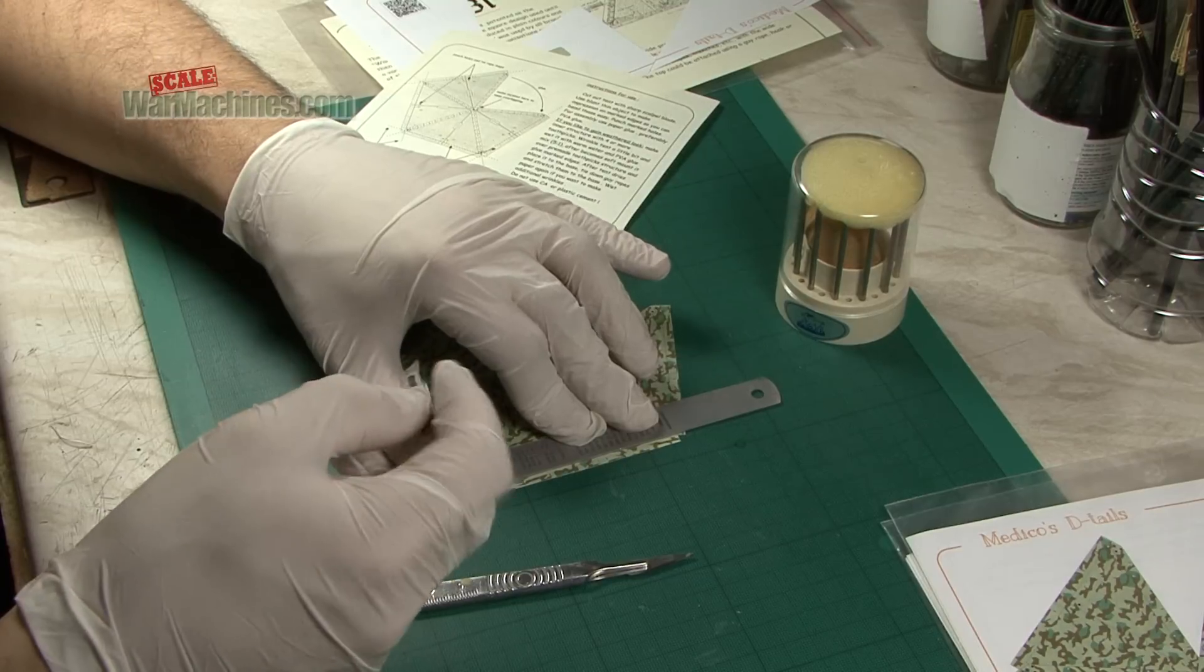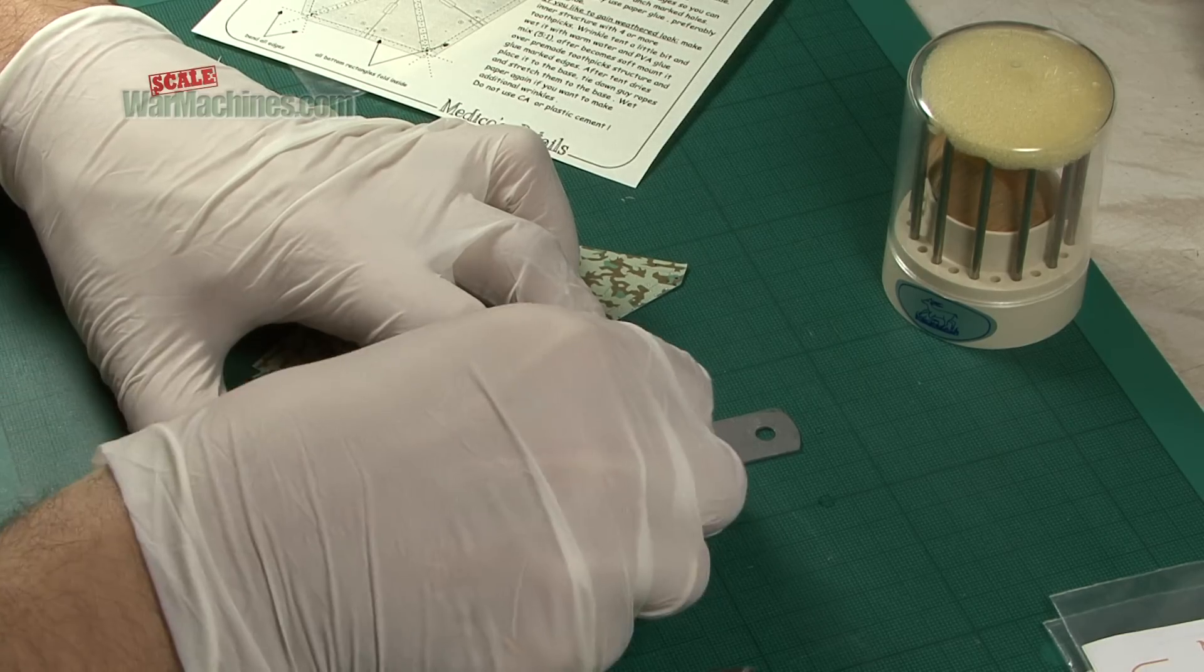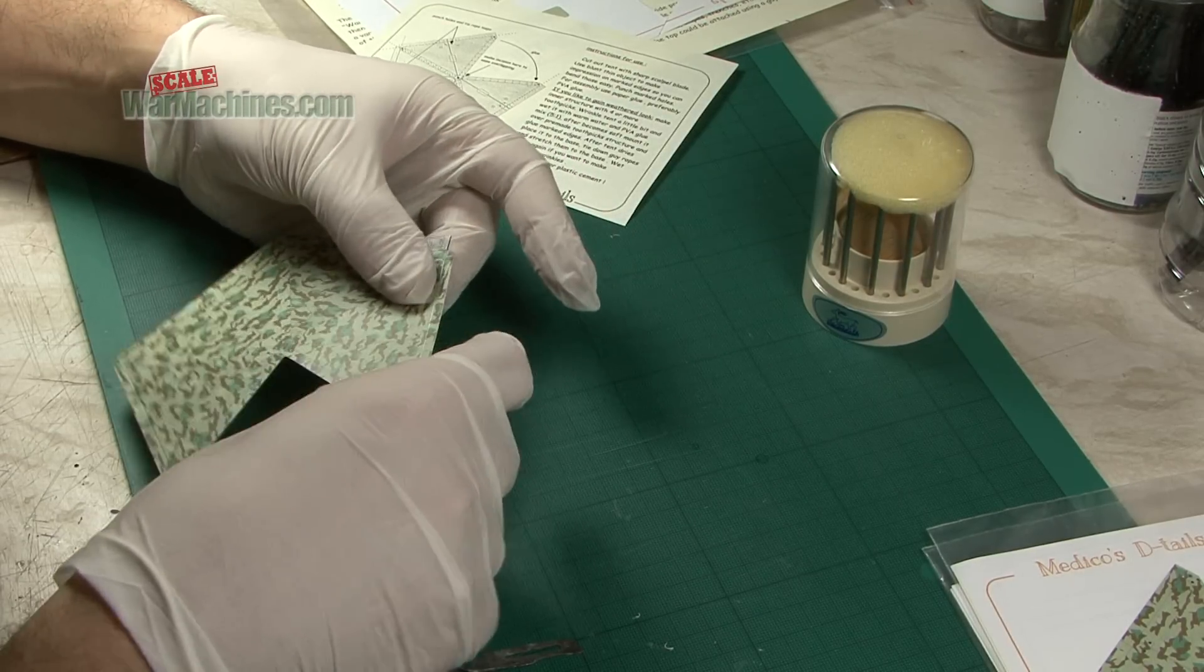You need a blunt blade and you just score along the line. Now it's time to bend over the line.